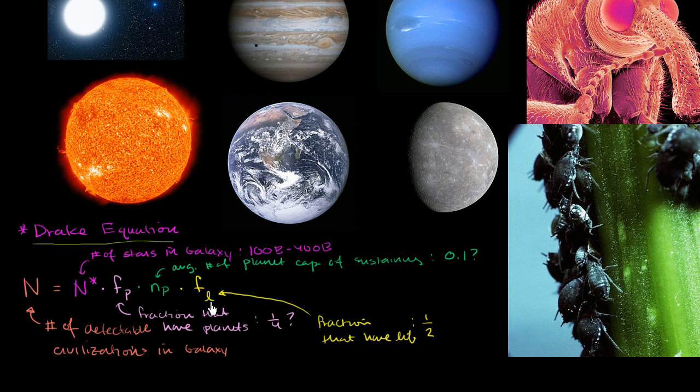So this should tell us essentially how many planets, if we were to multiply all of these, how many planets in our galaxy have had life on them at some point in those planets' lives. The life might have come and gone. It maybe destroyed itself through nuclear war or whatever. But this would tell us the number of life planets in our galaxy that have had life on them at least one point in their history.